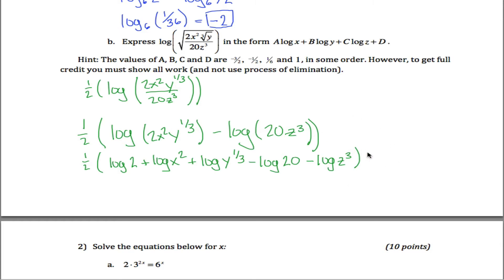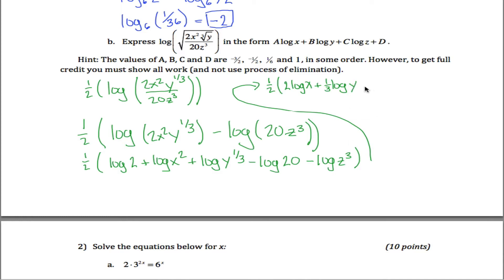Now applying the third log rule, taking all those exponents and bringing them down in front — and writing in a slightly different order to match the target form — we get one-half times: 2 log of x, plus one-third log of y, plus negative 3 log of z, plus log 2, plus minus log 20.